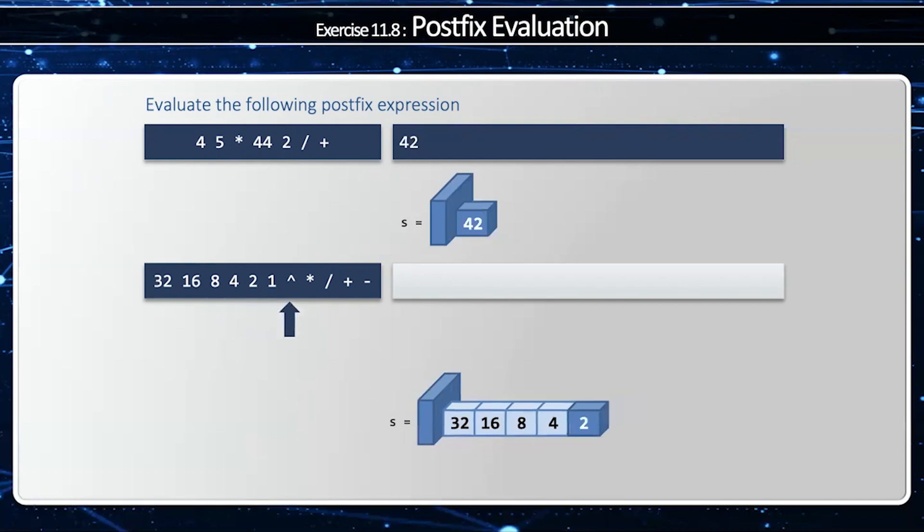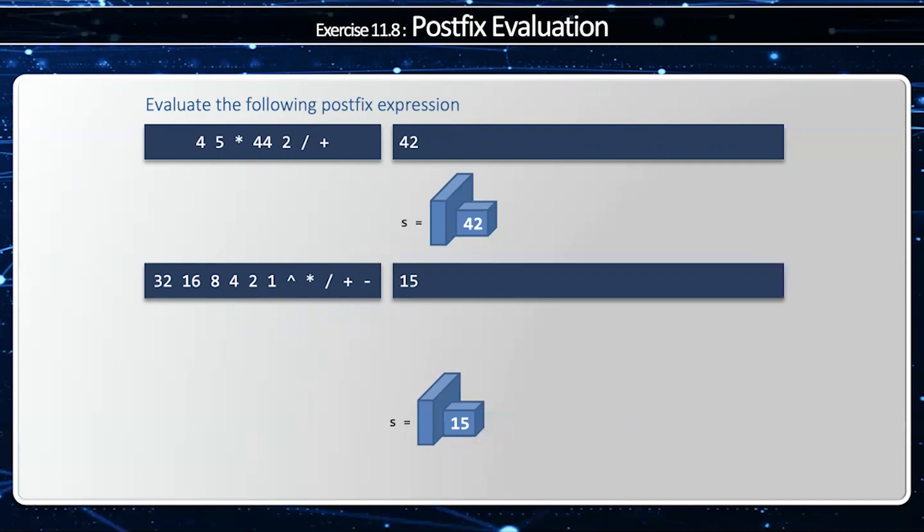Exponent, 2^1 is 2. Multiply, 4 * 2 is 8. Divided by, 8 / 8 is 1. Plus, 16 + 1 is 17. Minus, 32 - 17 is 15. And that's the answer.